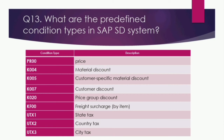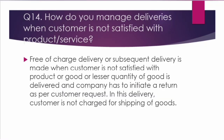The next question is: what are the predefined condition types in SAP SD? Some predefined condition types are: PR00 for price, K004 for material discount, K005 for customer-specific material discount, K007 for customer discount, K020 for price group discount, KF00 for freight surcharge, UTX1 for state tax, UTX2 for country tax, and UTX3 for city tax.